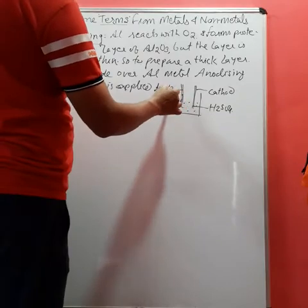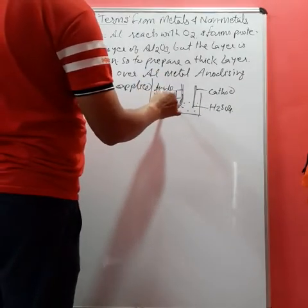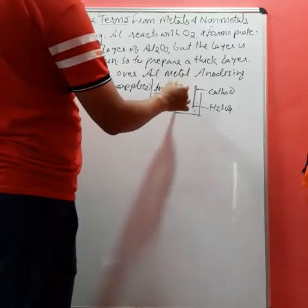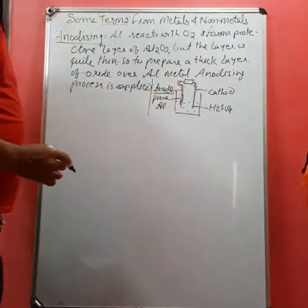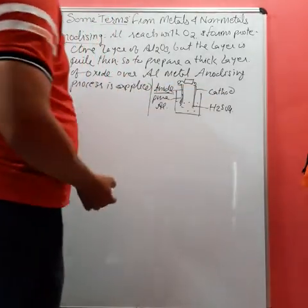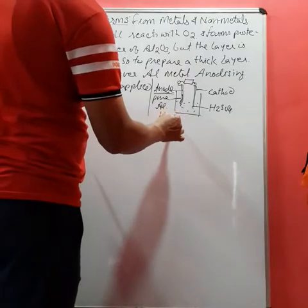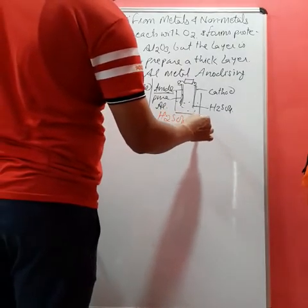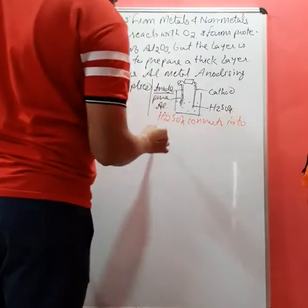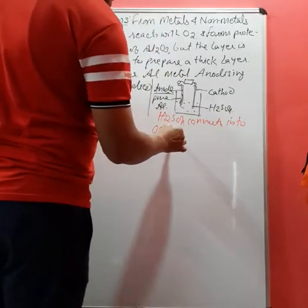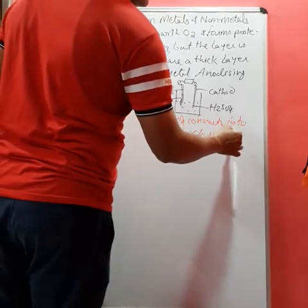This anode is made up of pure aluminum, and these metals are connected through the electric source. When the electric current is supplied, then the H2SO4 converts into O2 which reacts with aluminum.